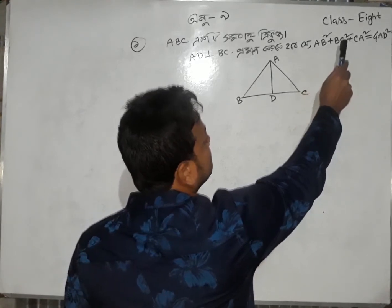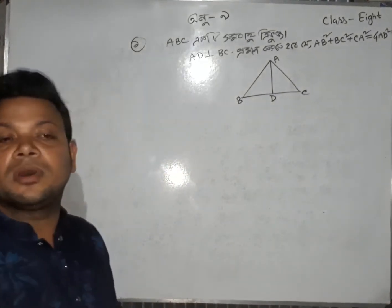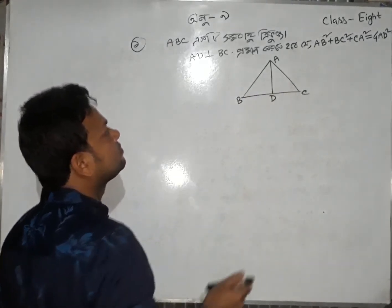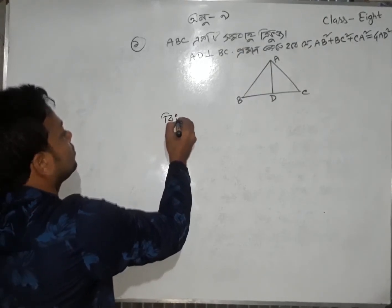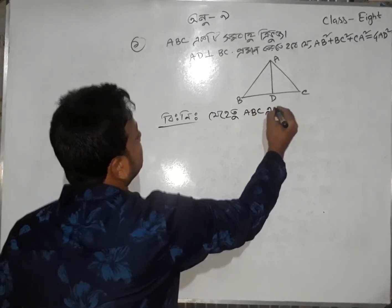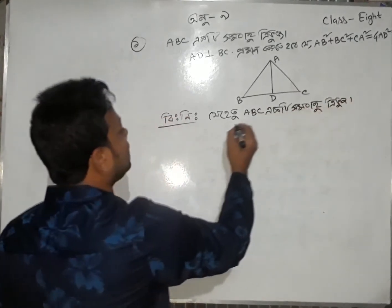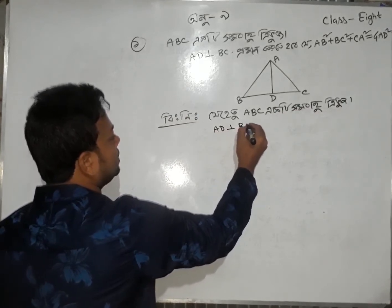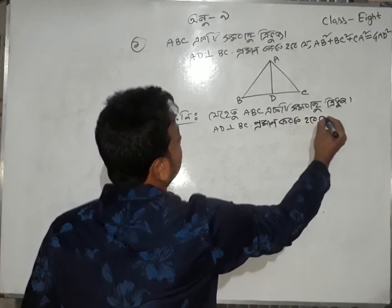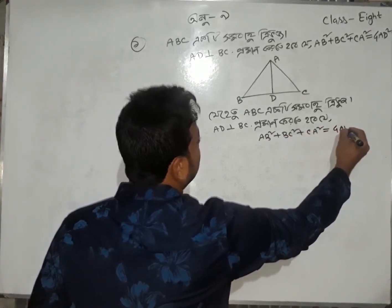a b c square plus b c square plus c a square equal to 4 a d square. In triangle ABC, AD is perpendicular to BC.